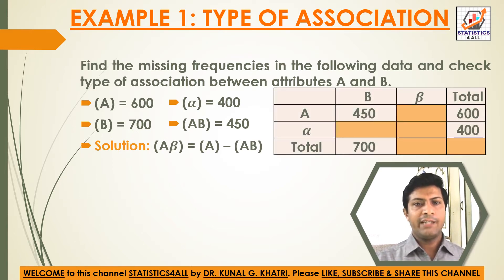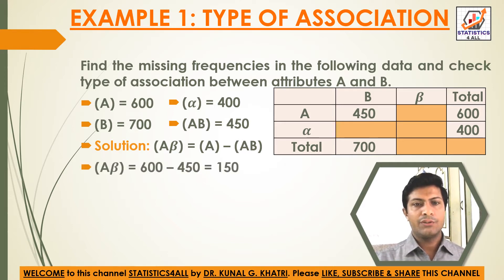First of all, we write all the data in this 2x2 contingency table. Now we will find A_beta, which is equal to A minus AB. A is 600 and AB is 450, so 600 minus 450 equals 150.